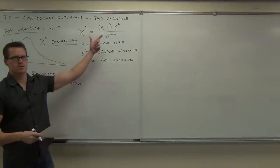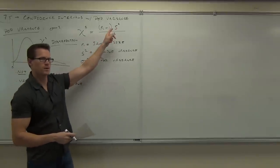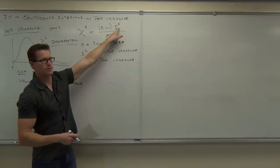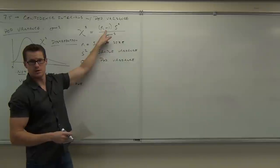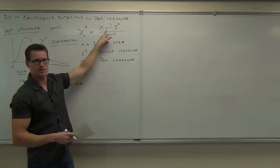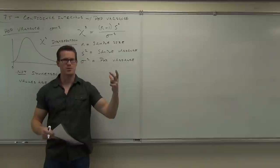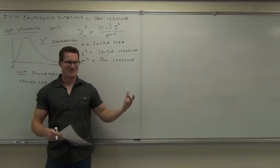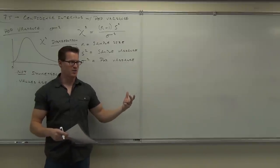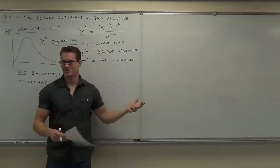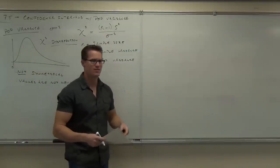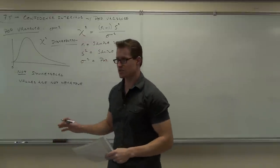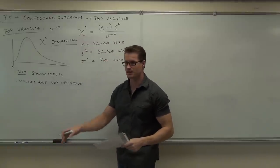Look at the formula — can that be negative? Can you have a negative sample size? No. Positive times positive over positive is going to give you a positive. You're never going to get a negative. These are not like Z scores or T scores. They will not be negative.